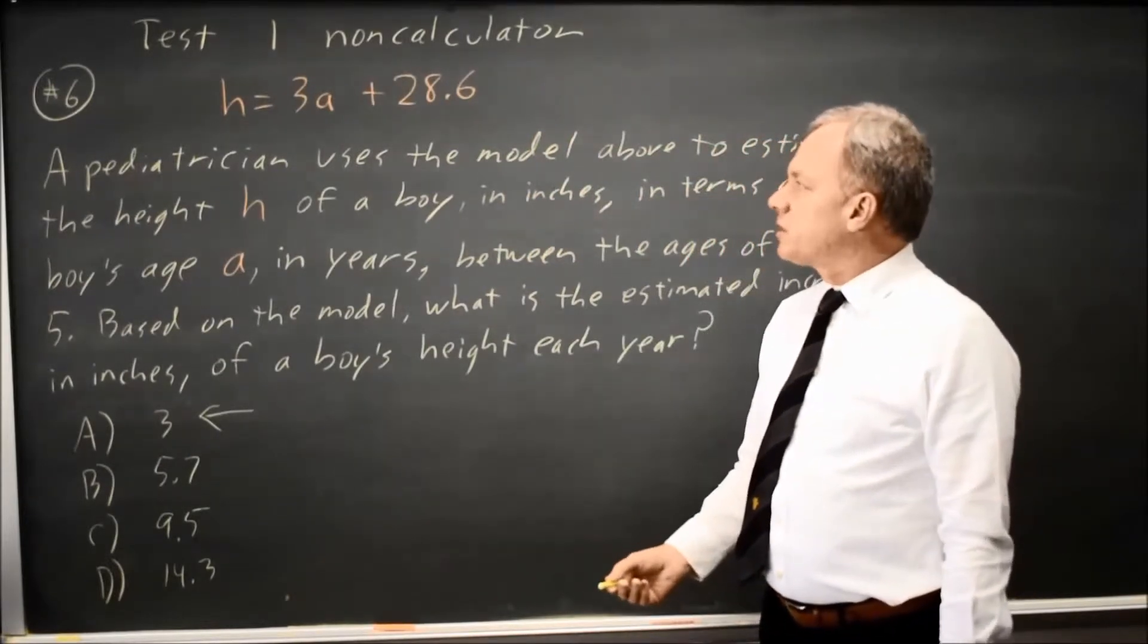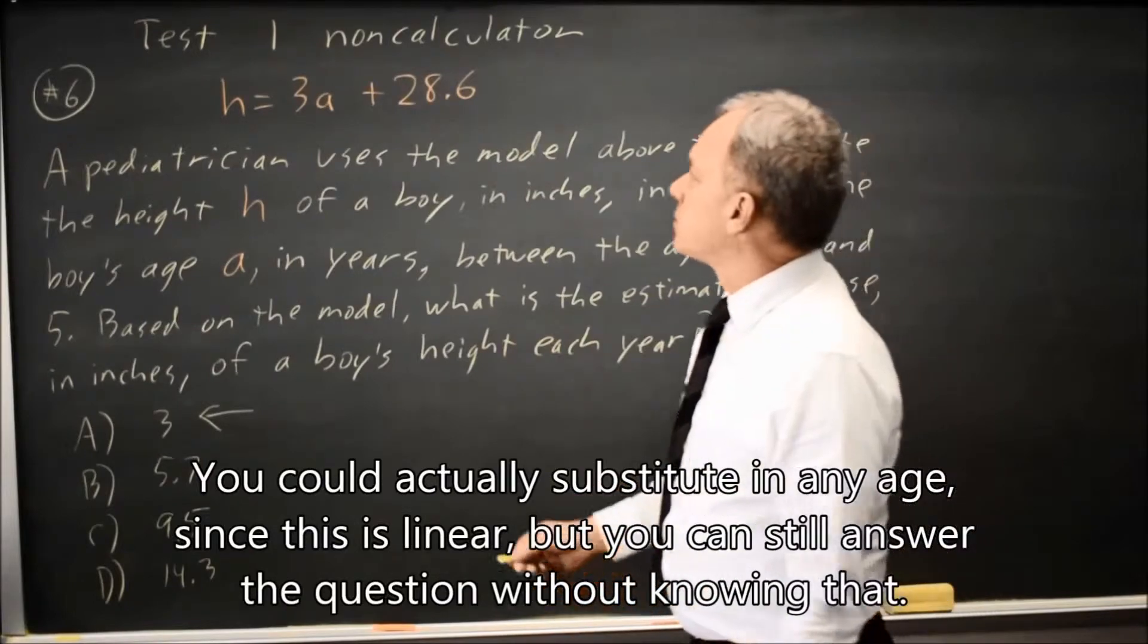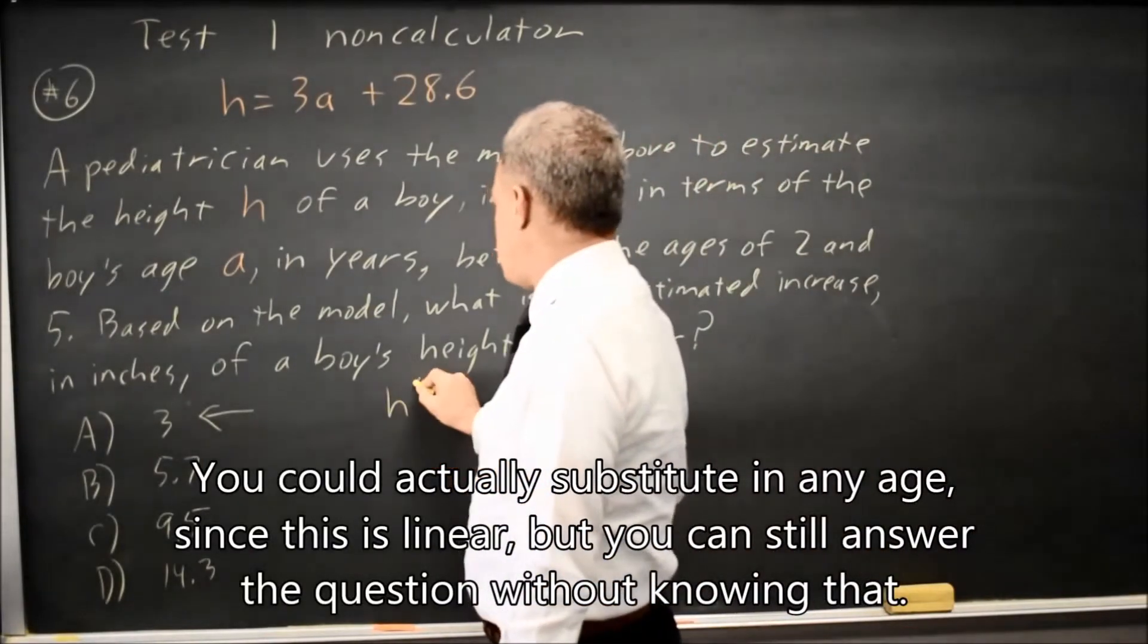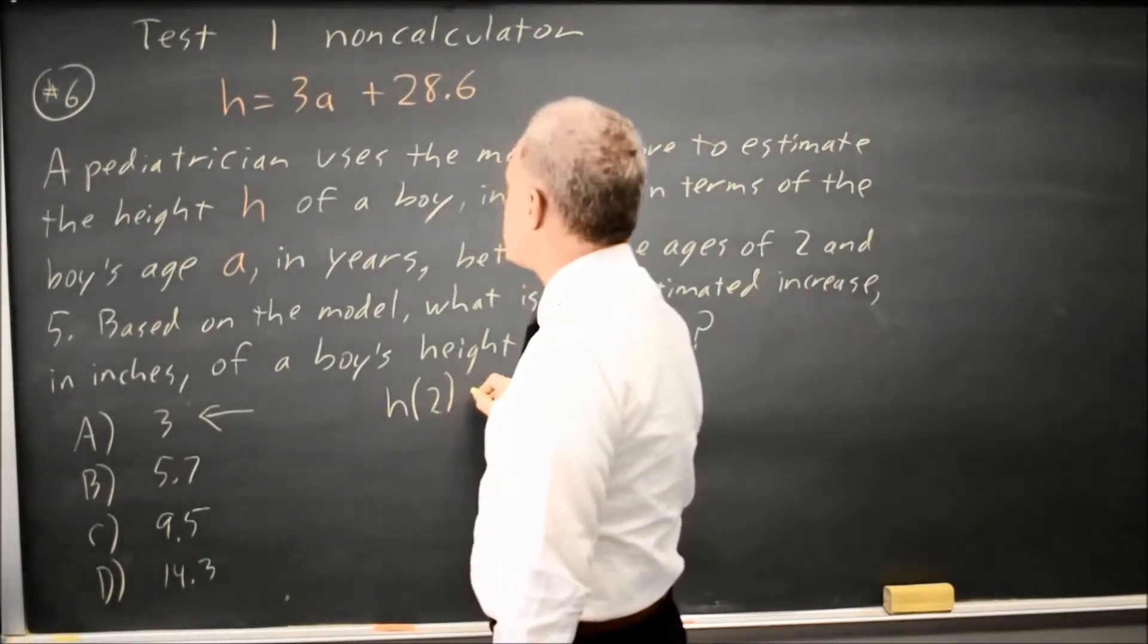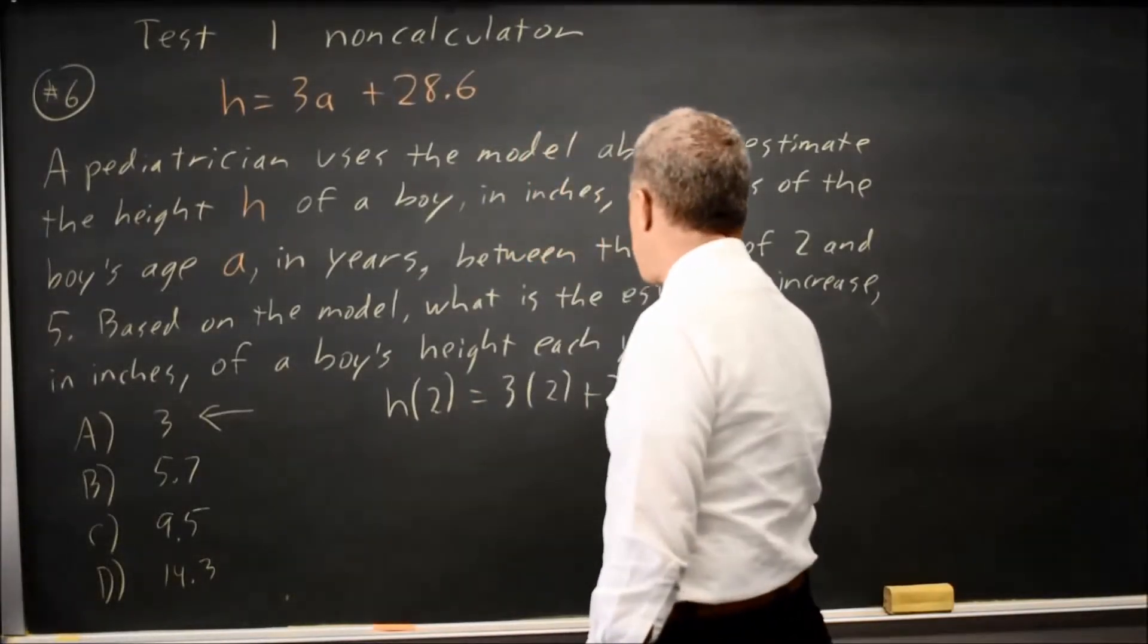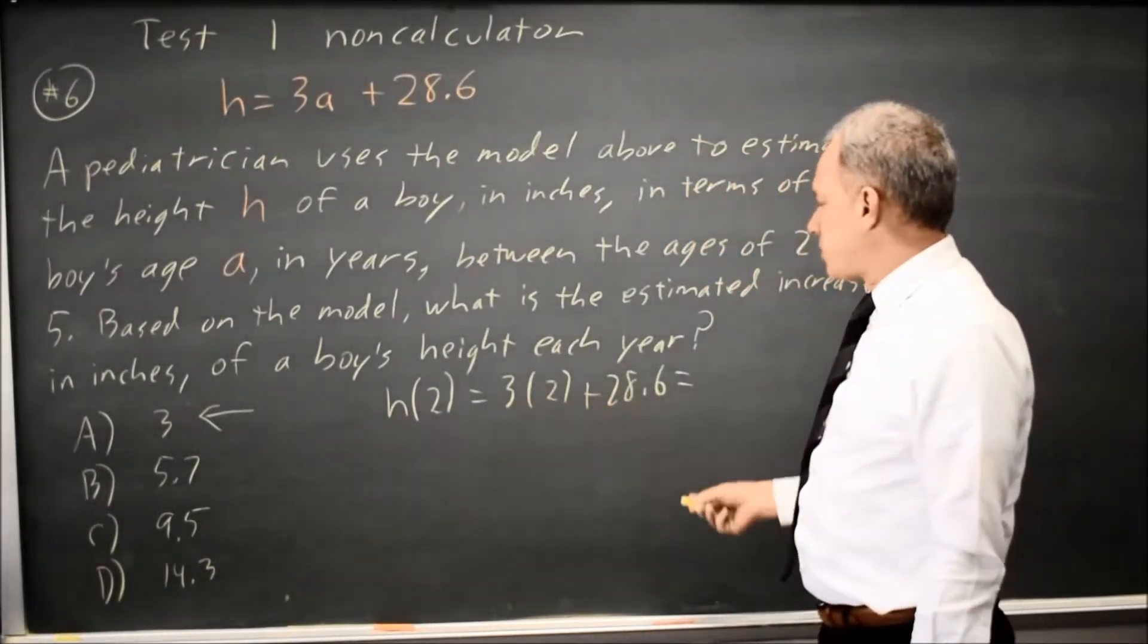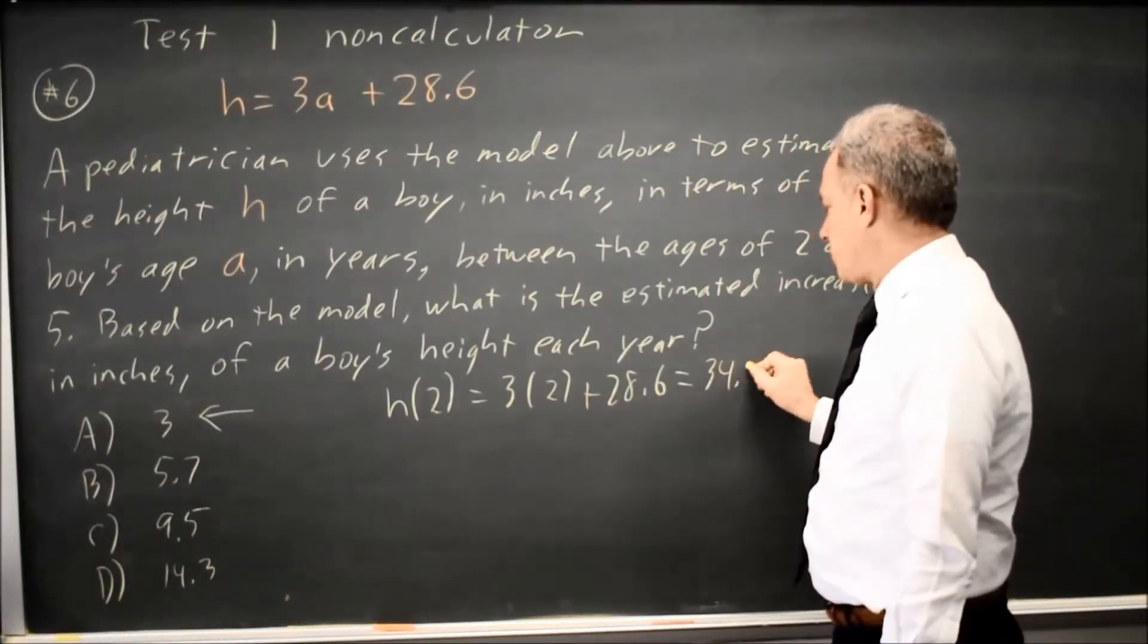To verify that, you can substitute in ages between 2 and 5. So let's try the height at age 2. Age of 2 equals 3 times your age 2 plus 28.6. 3 times 2 is 6 plus 28.6 is 34.6.